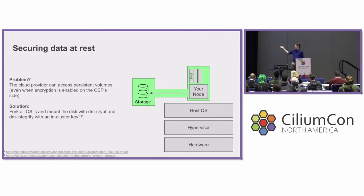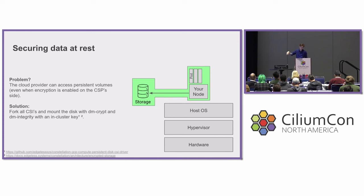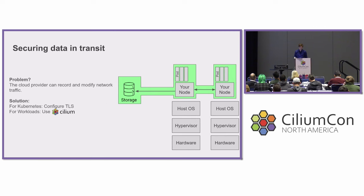Securing data at rest is sort of a solved problem. The key difference between what we do at Edgeless and what you might do if you trust the cloud provider is: you might say 'AWS, please encrypt my traffic, choose a key, and encrypt it.' What we do instead is mount disks with dm-crypt and a key that's just inside our trusted execution environment, which itself is not available to the cloud provider. So we encrypt within our trusted execution environment and extend our security boundary.